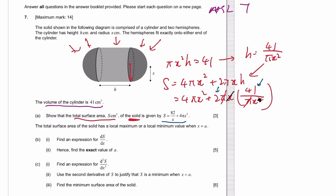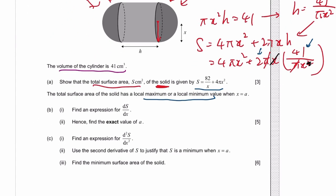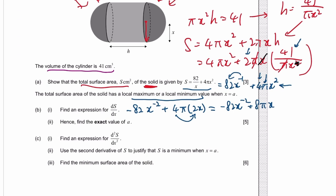They want to find either the maximum or minimum by asking us to differentiate. 81 over x is the same as x to the power of negative 1. We differentiate that by dropping the power, so it's negative 82 times x to the power of negative 2. Plus 4 is a coefficient, pi is also just a number, then differentiate x squared, 2x. So you get 4 times 2, which is 8 pi x.